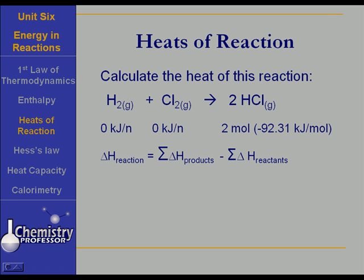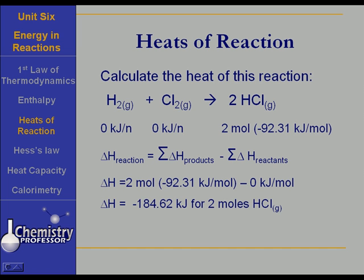The way you calculate the delta H for the reaction is to take the delta H for the products minus the sum of the delta Hs of the reactants. And remember, it's products minus reactants. So we take the products. Well, that is minus 92.31 kilojoules per mole times 2 moles. And then the delta H of the reactants is zero. So the delta H for this reaction is minus 184.62 kilojoules for the two moles of HCl that have been formed. Keep that in mind that that is for two moles. For each mole, it's minus 92.31 kilojoules per mole.